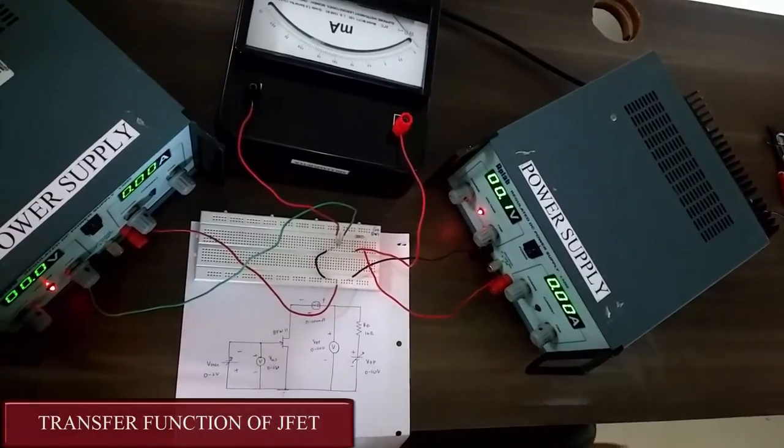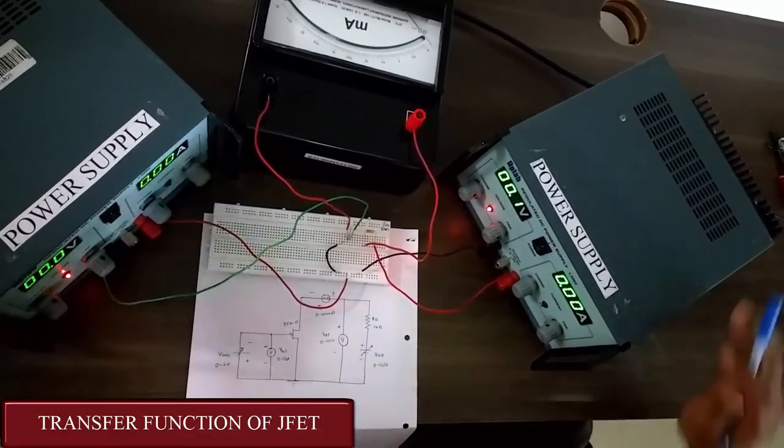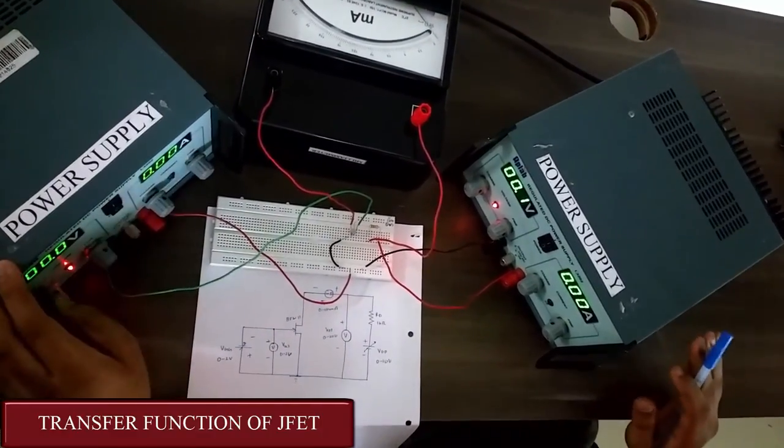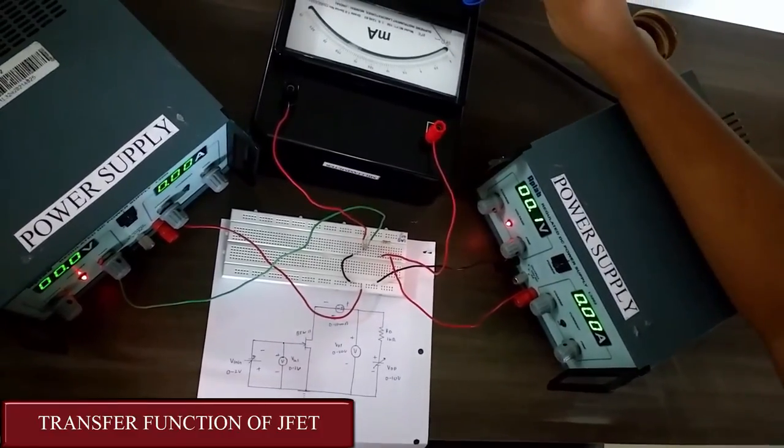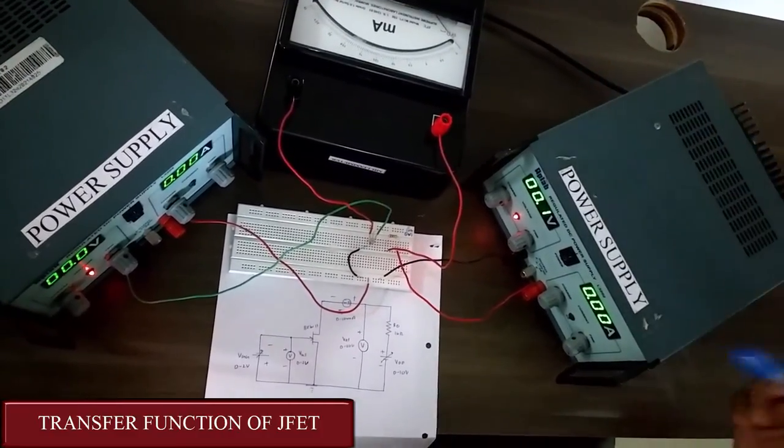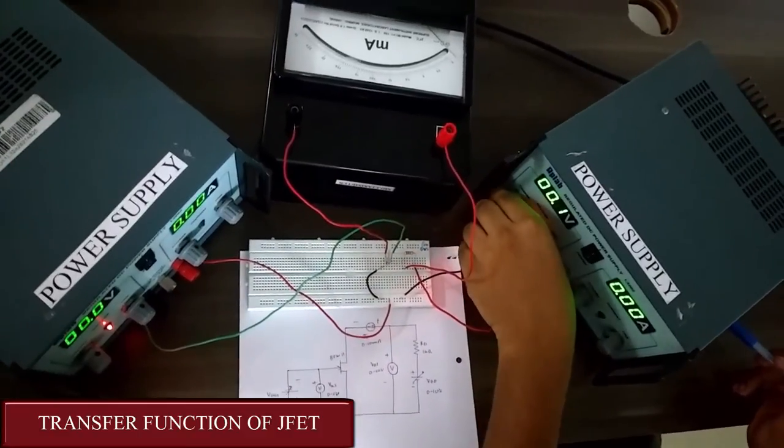These are the two voltages which are applied. This one is VGG and this one is VDD. VGG is kept constant and VDD is increased. This milliammeter gives us the value of ID. Now we are going to increase the VDD.